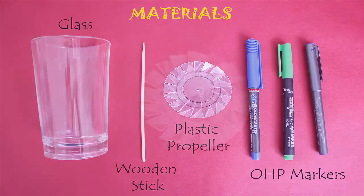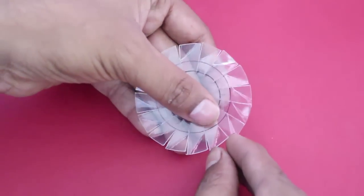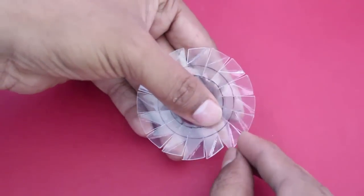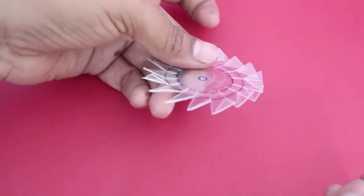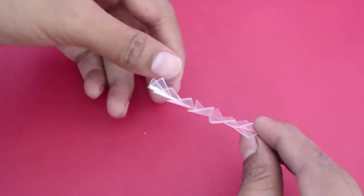The propeller is a disc of stiff plastic with 16 cuts. The cuts are twisted to make fan blades. There is a hole in the center.